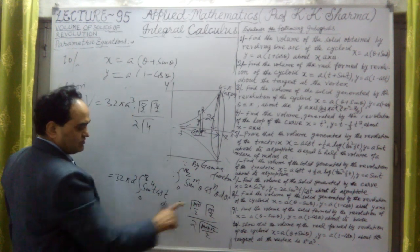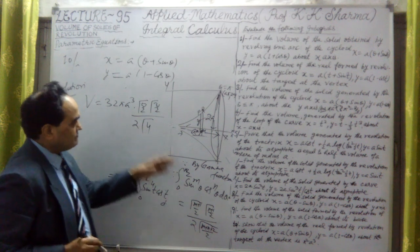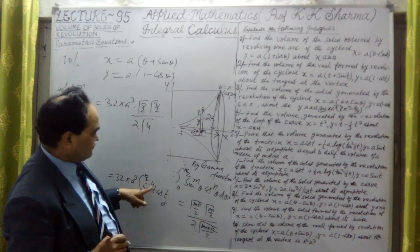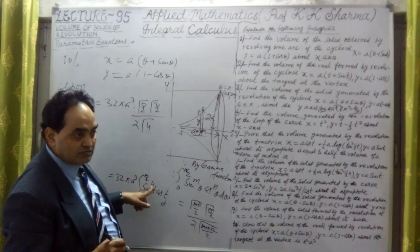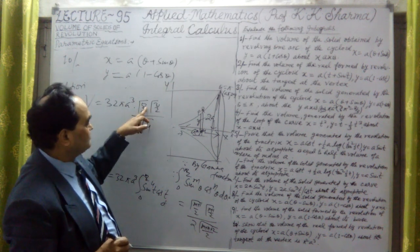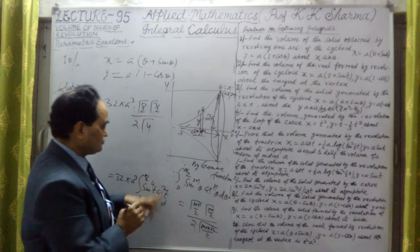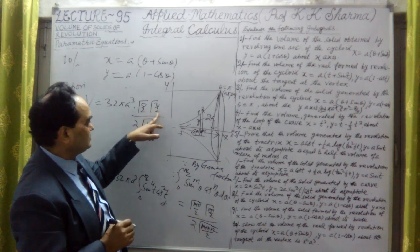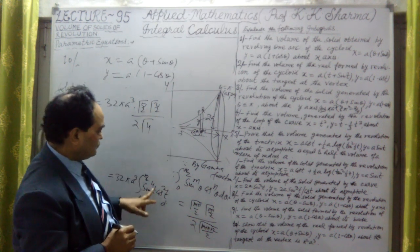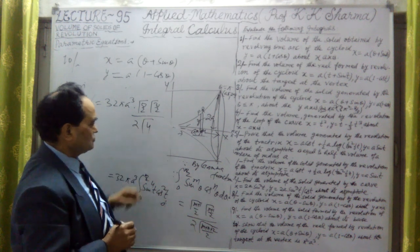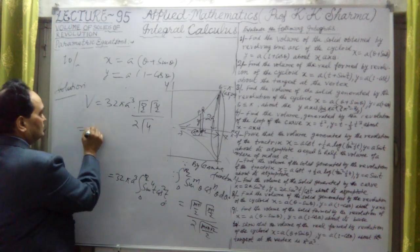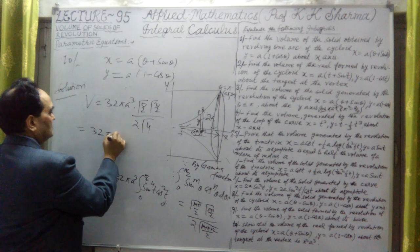This is the value of gamma function. We use gamma function here. We have sin power 4, in place of m is 4 plus 1 means 5 by 2, cos squared 2 plus 1 is 3 by 2, upon gamma 4 plus 2, 6 plus 2, 8, 8 by 2 is 4. Now let me finally solve it.